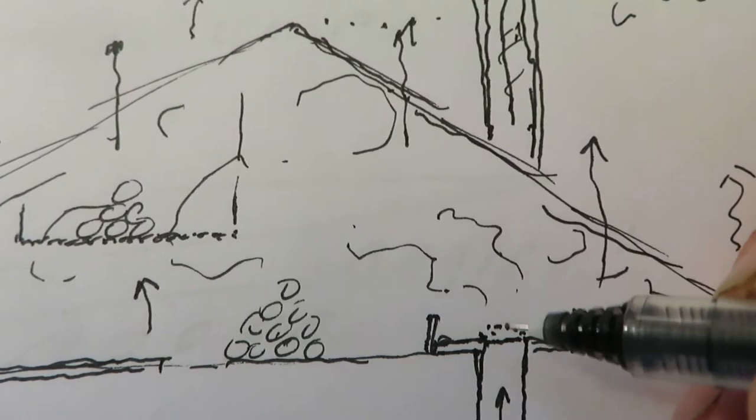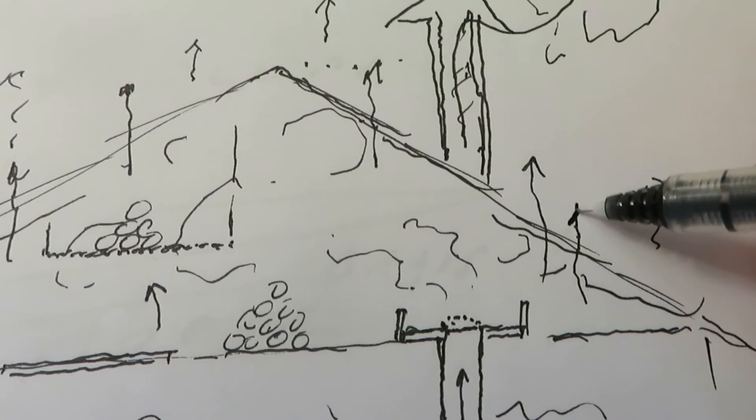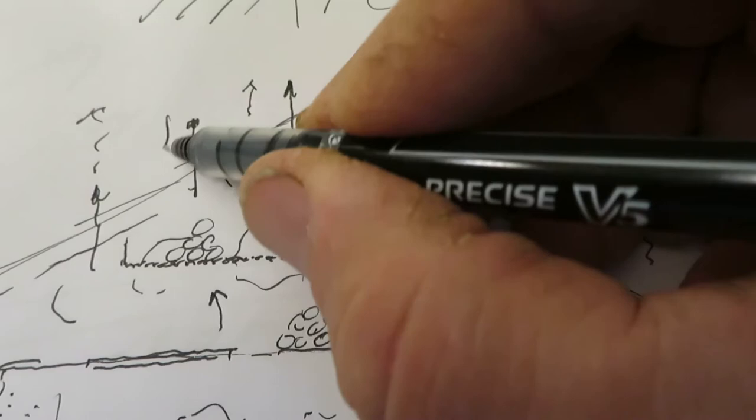So the smoke will enter into this closed area and be forced to actually move through thatch. And to leave the creosote deposits, which, by the way, make it impermeable to rain also.